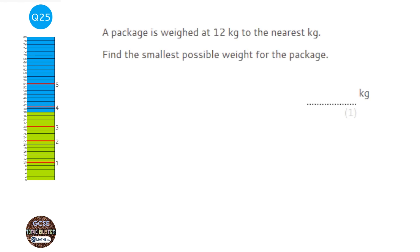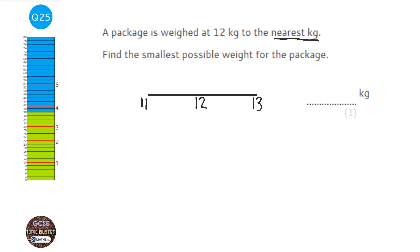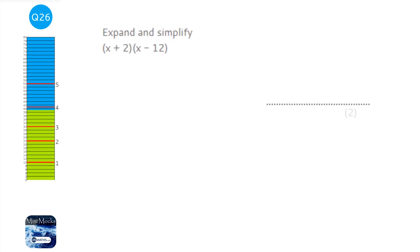Draw a quick number line with 12 in the middle. To the nearest kilogram, the next value down could be 11 and the next up could be 13. The lower bound — the smallest possible weight — is the halfway point between 11 and 12, which is 11.5. If it were slightly less than 11.5, it would have rounded down to 11.